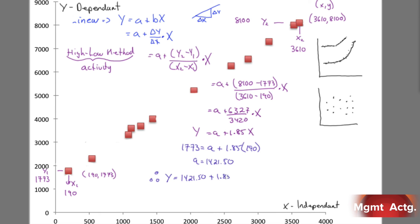So we have our full function. Y, the cost, will equal our fixed cost which is 1421 and 50 cents, plus our variable cost per unit times the number of units. There we go. Using the high-low method we have come up with our formula for figuring out the cost of anything. Let's see if this works out very nicely.